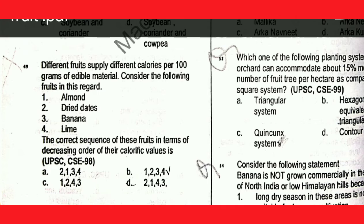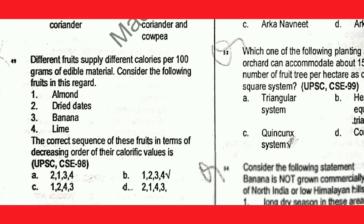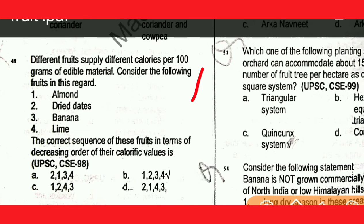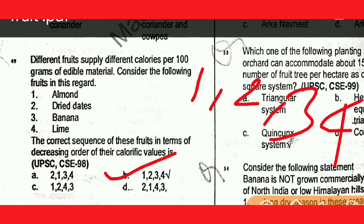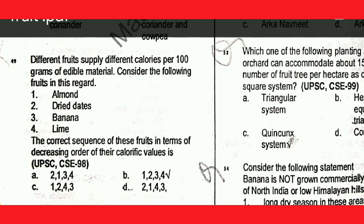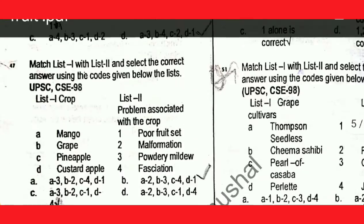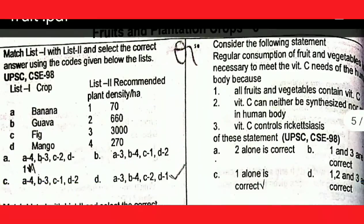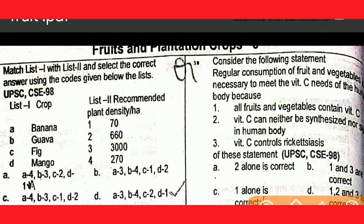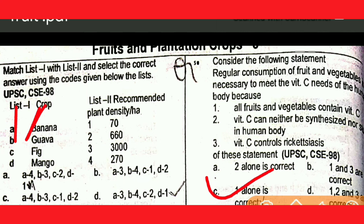Next question: consider the following fruits which supply different calories per hundred grams of edible material. The correct sequence of these fruits in the decreasing order of their caloric content is 1, 2, 3, 4. Option C is correct.